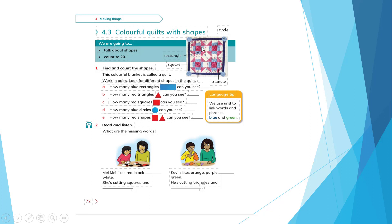5, 6, 7, 8, 9, 10, 11, 12, 13, 14, 15, 16. Good job — you're right: 16 blue rectangles.